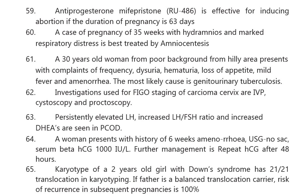A 30-year-old woman from a poor background in a hilly area presenting with frequency, dysuria, hematuria, loss of appetite, mild fever, and amenorrhea — the most likely cause is genitourinary tuberculosis. Investigations used for FIGO staging of carcinoma cervix are IVP, cystoscopy, and proctoscopy.